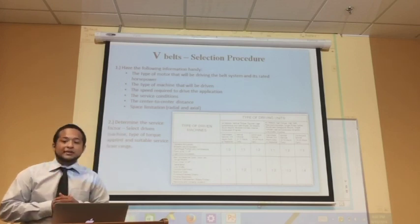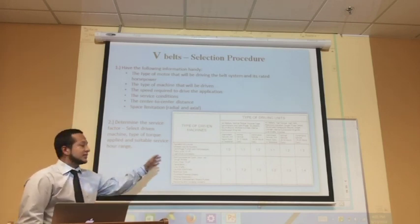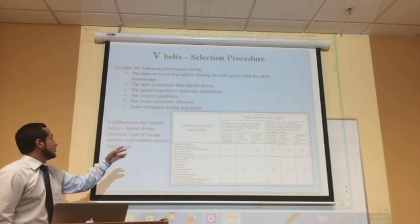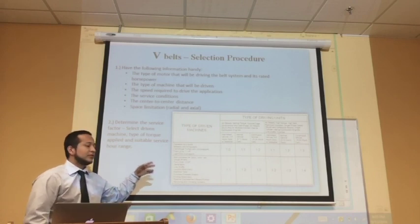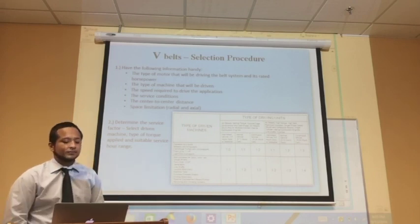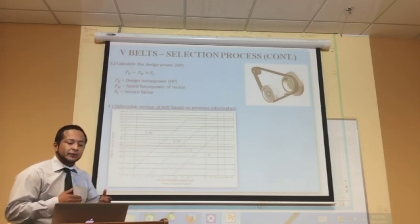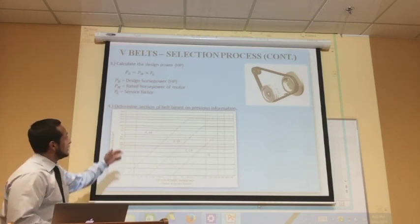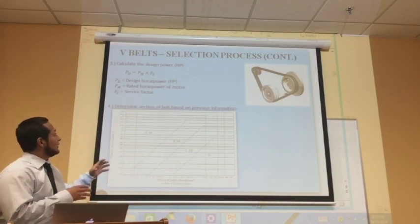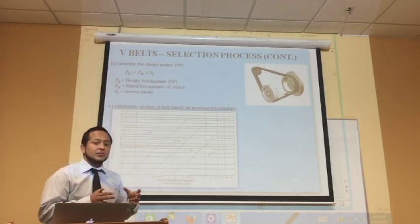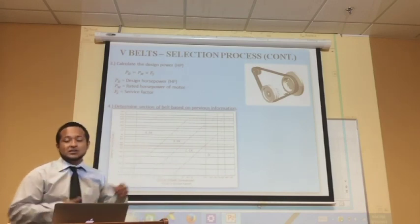The second step is to determine the service factor, which is determined by using the following table. You first have to select the driven machine, the type of torque applied, and the suitable service hour range. Step 3 is to calculate the design power in horsepower by utilizing the following formula. Once all that information is gathered, you can use the following table to find the section of the belt.